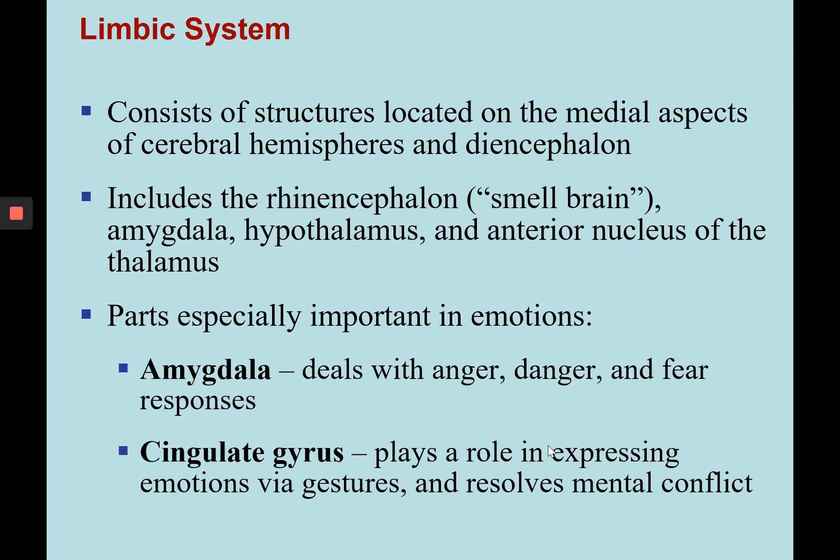The limbic system is your emotional brain, as seen in the function of structures like the amygdala, which deals with anger, danger, and fear responses, or the cingulate gyrus, which plays a role in expressing emotions via gestures and helps resolve mental conflict. The limbic system is able to communicate with both the prefrontal cortex, a multimodal association area, and use memory in order to have an emotional response appropriate for past experiences.